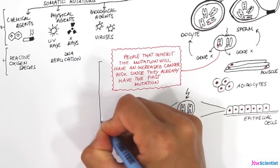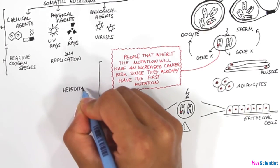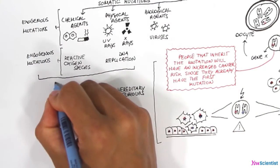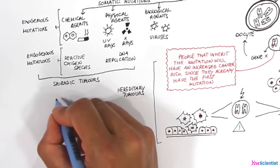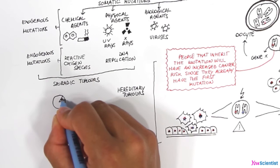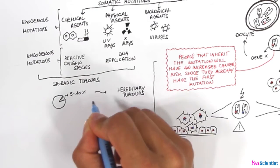That's why we call this type of cancer hereditary tumors, unlike sporadic tumors, that are triggered by accidental mutations during one lifetime. Hereditary tumors represent between 5 and 10% of all cancers diagnosed in the population.